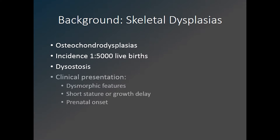The clinician begins by suspecting that a skeletal dysplasia may be present, often based on dysmorphic features of the child, shortened limb segments, or short stature. Many skeletal dysplasias are detected prenatally as well, and some are lethal. We will not be discussing the prenatal evaluation of a skeletal dysplasia within this talk.